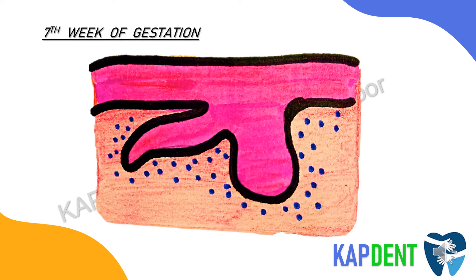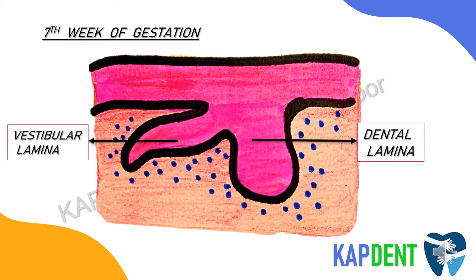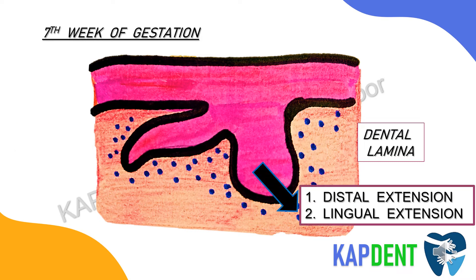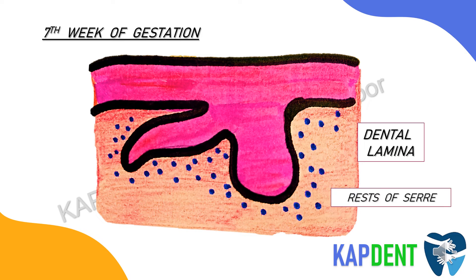The vestibular lamina, also termed the lip furrow band, subsequently hollows and forms the oral vestibule. The dental lamina serves as the primordium for the ectodermal portion of the teeth. This lamina gives a distal extension for the development of permanent molars and a lingual extension for the development of successor teeth, and is thus also called the successional lamina. Dental lamina functions for a relatively short period, but since the development of third molars is initiated around 4 to 5 years, its activity extends over a period of at least 5 years.